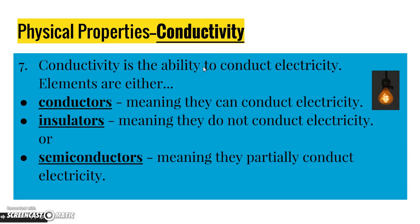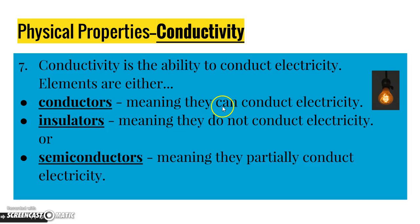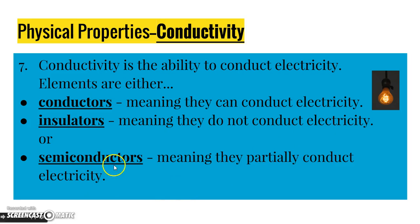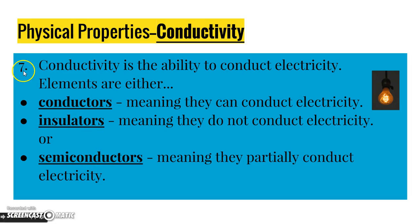Conductivity is the ability to conduct electricity. Elements are either conductors, which means they can conduct electricity; insulators, meaning they do not conduct electricity; or semiconductors, meaning they partially conduct electricity. So conductivity is either conductor, insulator, or semiconductor. That's number seven on your homework.